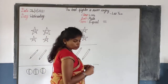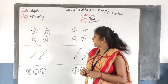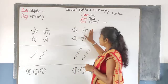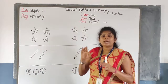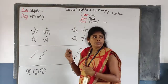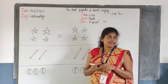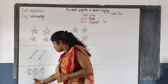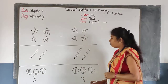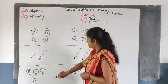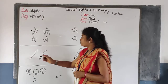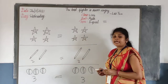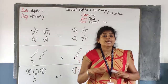Now look at the board, children. I will show you more examples of equal. Count the stars: 1, 2, 3, 4 — four stars. What about this side? 1, 2, 3, 4 — four stars. Both sides are equal, so the symbol for equal is used. Next row: 1, 2, 3 — three balls. This side also: 1, 2, 3 — three balls. It is equal in number. And for the pencils: left side has 1, 2 — two pencils. This side also: 1, 2 — two pencils. The number of objects is the same in both sets, so they are equal.